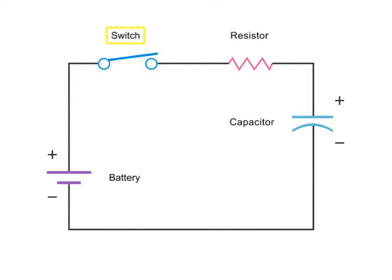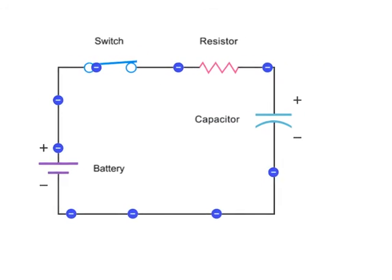When the switch is closed, electrons flow and charge builds up on the capacitor's plates. This causes the voltage across the capacitor to increase.